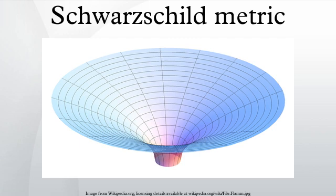In practice, the ratio rs/r is almost always extremely small. For example, the Schwarzschild radius rs of the Earth is roughly 8.9 mm, while the Sun, which is 3.3×10⁵ times as massive, has a Schwarzschild radius of approximately 3.0 km.